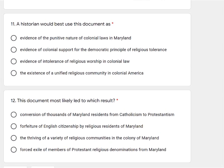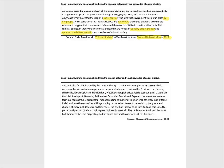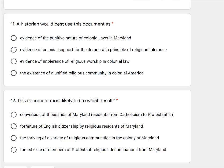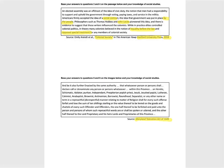So let's go to questions 11 and 12 based on this written document. Let's start with the sourcing information: the Maryland Toleration Act of 1649. Toleration means treating each other reasonably and fairly, and it's 1649. Now let's look at what's going to be asked of us: a historian would best use this document as — that's question 11 — and question 12 is: this document most likely led to which result? So: how would a historian use this document, and what resulted from it? Let's go back and finish annotating, reading this excerpt from the Maryland Toleration Act.